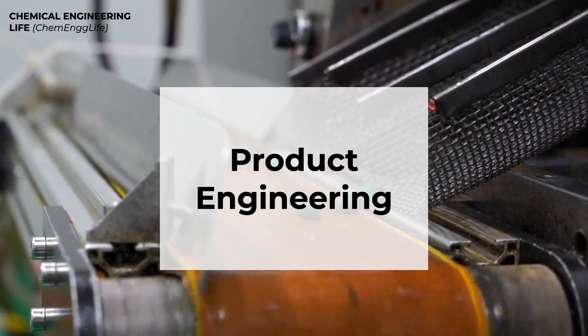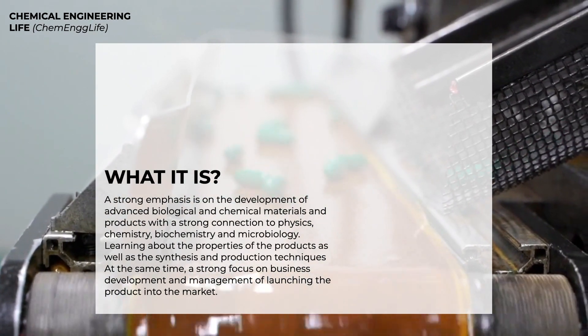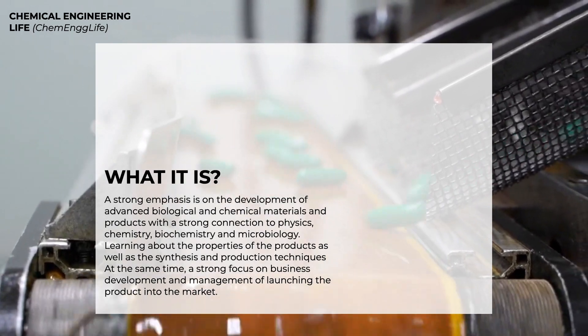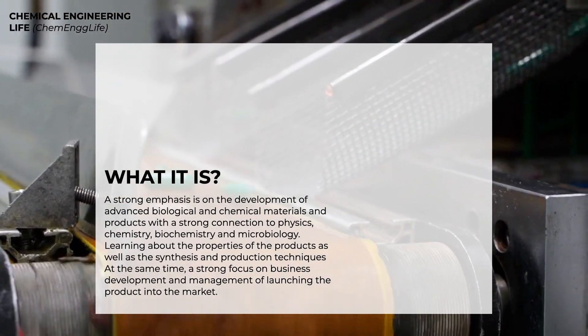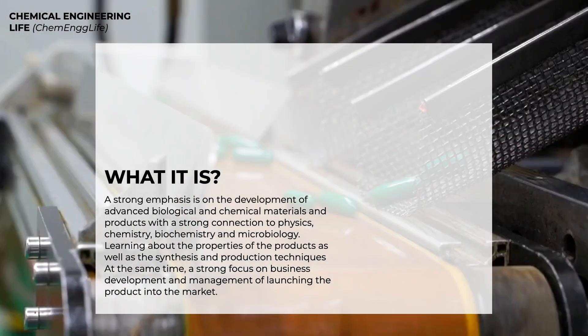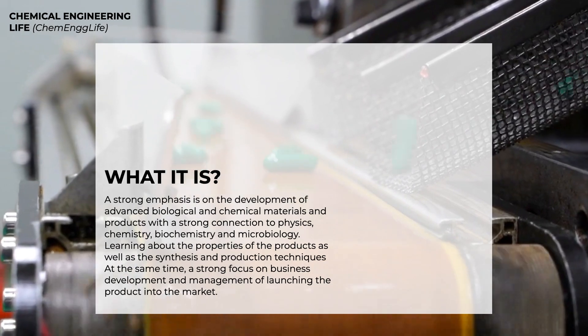Another specialization area for chemical engineers is the product engineering line. Now product engineering is the study where you come to learn more about products and their properties and understand how they can be marketed. To define it more clearly, you will come to learn about the process of innovating, designing, developing, testing, and finally launching a product.